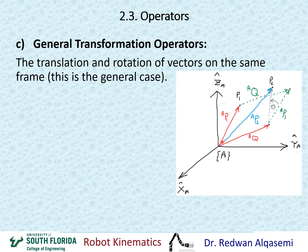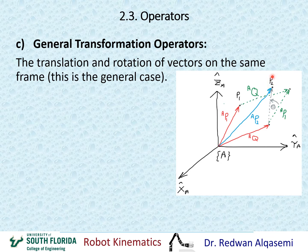So to recap: the first step is we had the definition of P1 relative to A. Then we translated this line along Q relative to A, resulting in the green line, still P1 relative to A. Then we rotated this line about axis K by theta degrees, resulting in the gray line. That gray line defines point P2. Now we need to define P2 relative to frame A, which is the blue line.